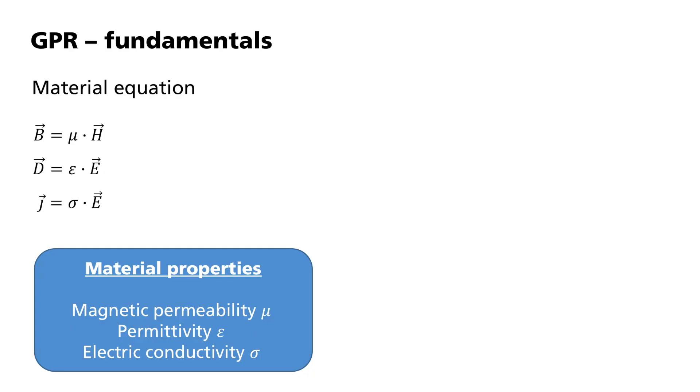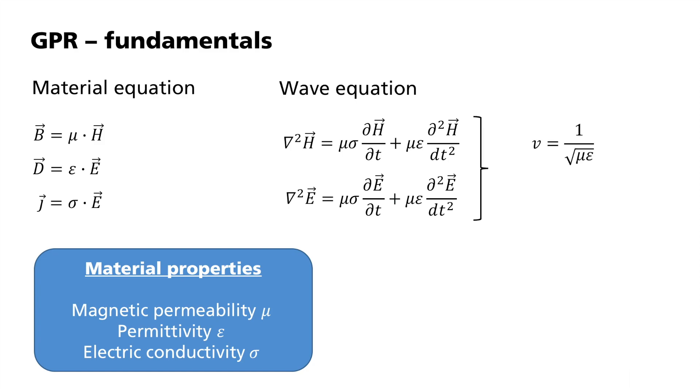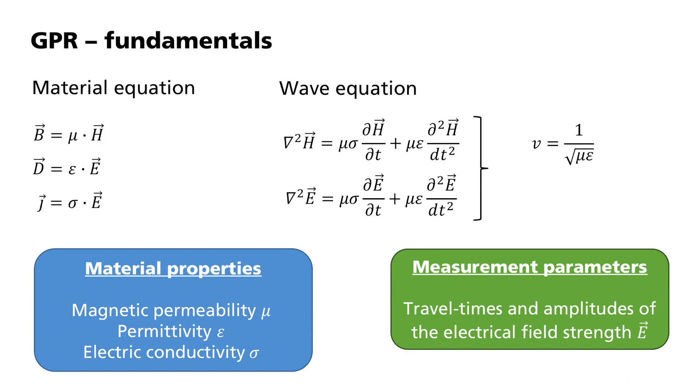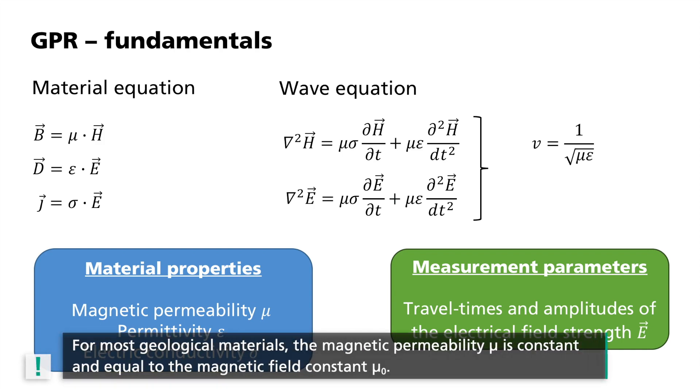For both the electric and the magnetic field strength E and H, the wave equation applies in a charge-free space. From this, one can calculate the propagation velocity V of the electromagnetic waves. For frequencies greater than about 10 MHz, V is equal to 1 divided by the root of epsilon times mu. It can also be calculated using the travel times of waves. Together with the amplitudes of the radar waves, they represent the measurement parameters of the GPR.